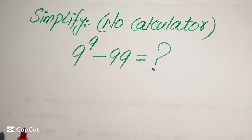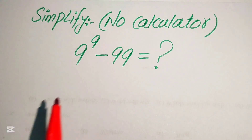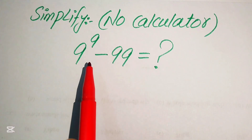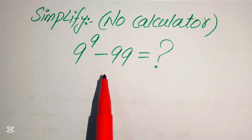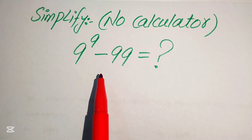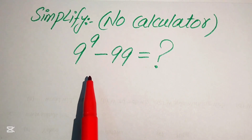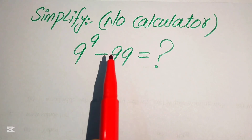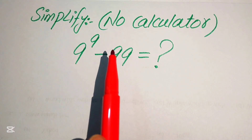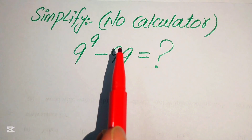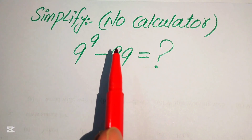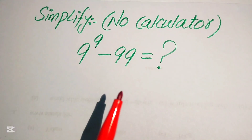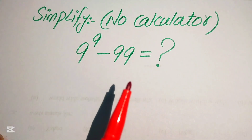Hello everyone, welcome. Simplify this nice algebraic expression: 9 to the power of 9 minus 99. We write this into simplified form, but remember — a calculator is not allowed in this problem. We will show all of the working here.